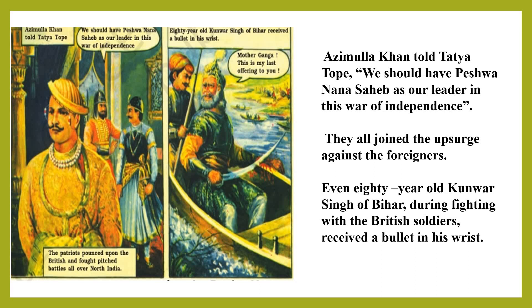Eighty-year-old Koar Singh of Bihar received a bullet in his wrist. He simply cut it off, throwing it into the Ganga. He said that it was his last offering. This is the final part of the story on how Indians tried to get freedom from the clutches of the British.